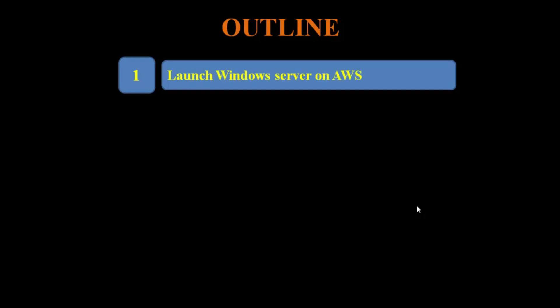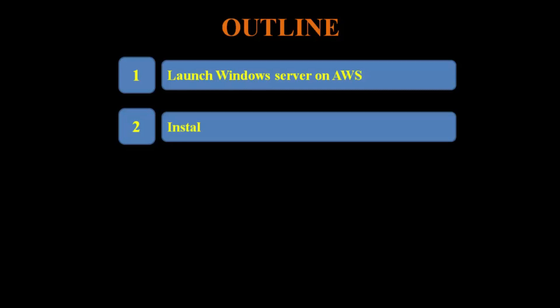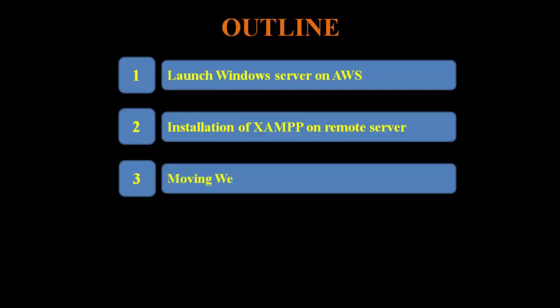First, let's go over the outline of today's video. First, we will discuss how we can launch Windows Server on AWS using EC2 instance. Then we will discuss how we can install XAMPP on a remote server. The last step is very important — in the third step we are going to move our website on cloud. So let's move on to our first step: how we can launch Windows Server on AWS.